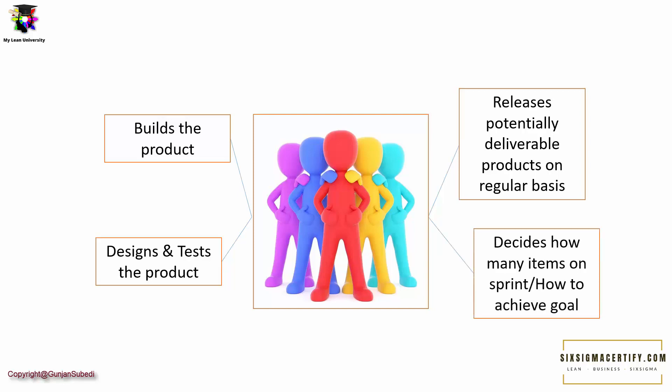The cross-functional team also decides how many items to put in the sprint and how to achieve the sprint goals. After the Product Owner prepares the backlog, the cross-functional team members select items from it and prepare and prioritize the sprint backlog with a plan to achieve the project goal.